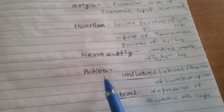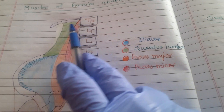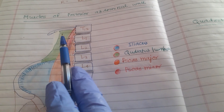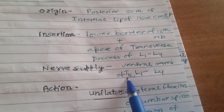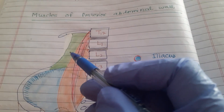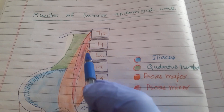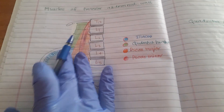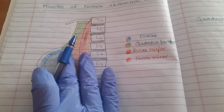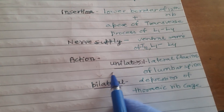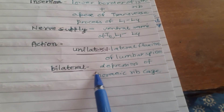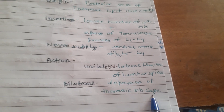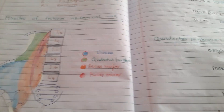Nerve supply of quadratus lumborum is the ventral rami of T12, L1, L2, L3, L4, as it inserts near those levels. Action: when contracting unilaterally it causes lateral flexion of the lumbar spine; when contracting bilaterally it depresses the thoracic rib cage.